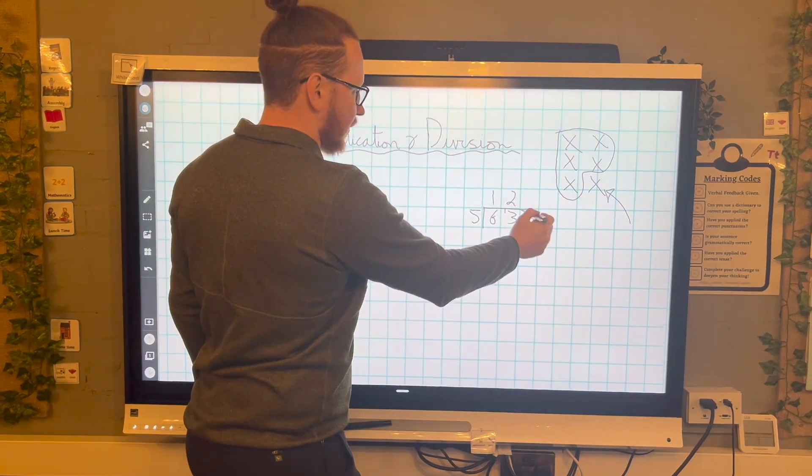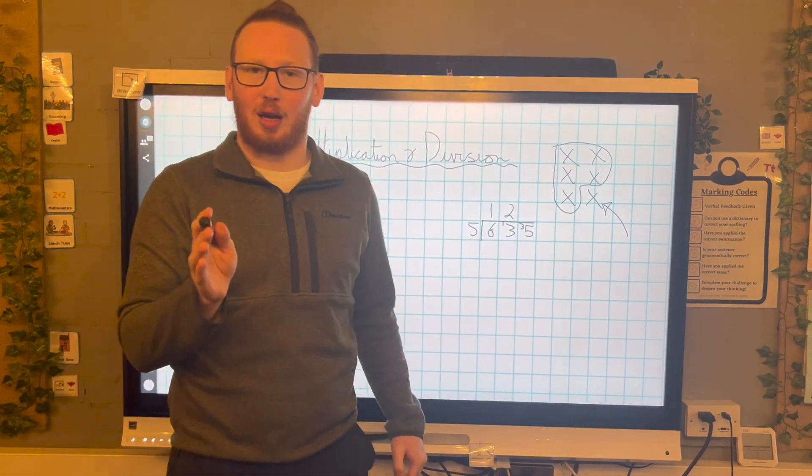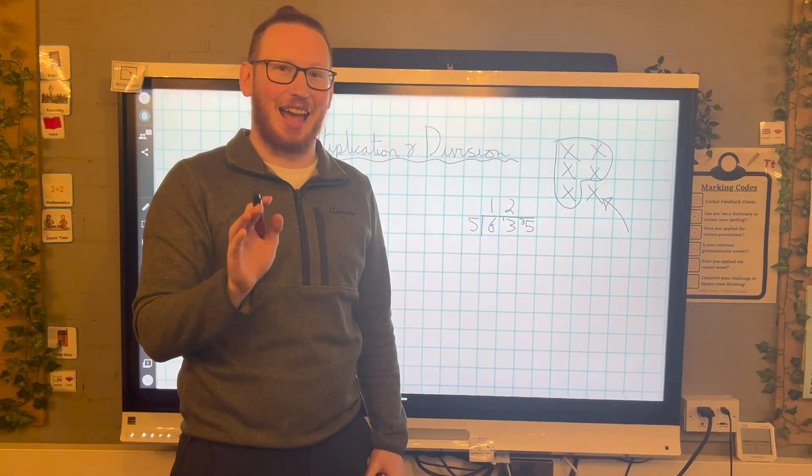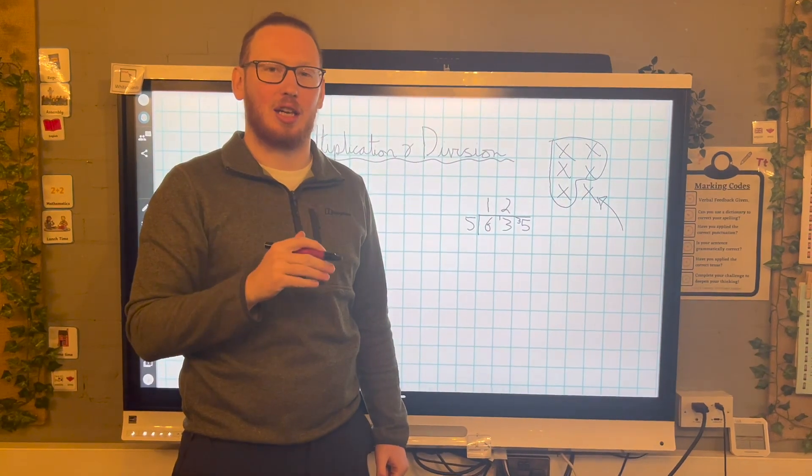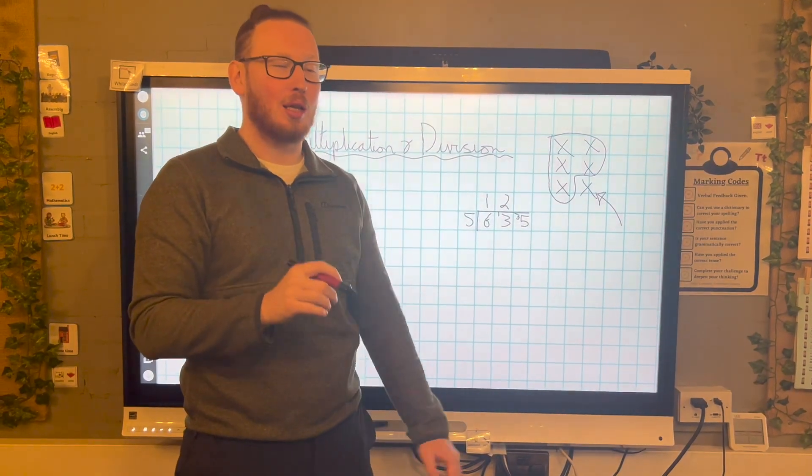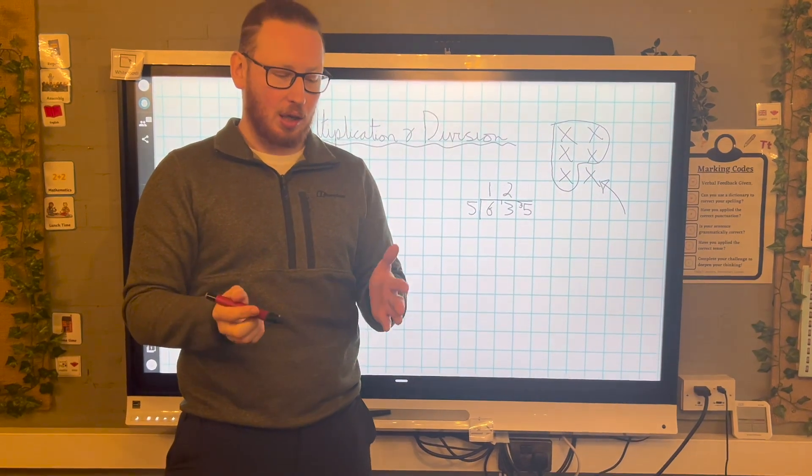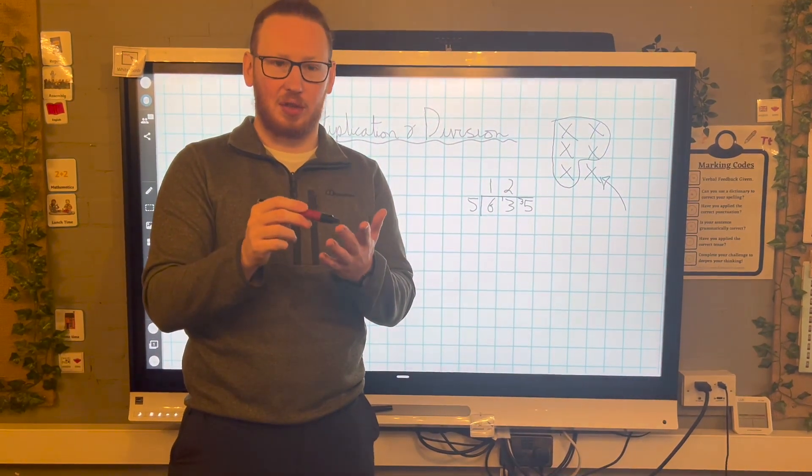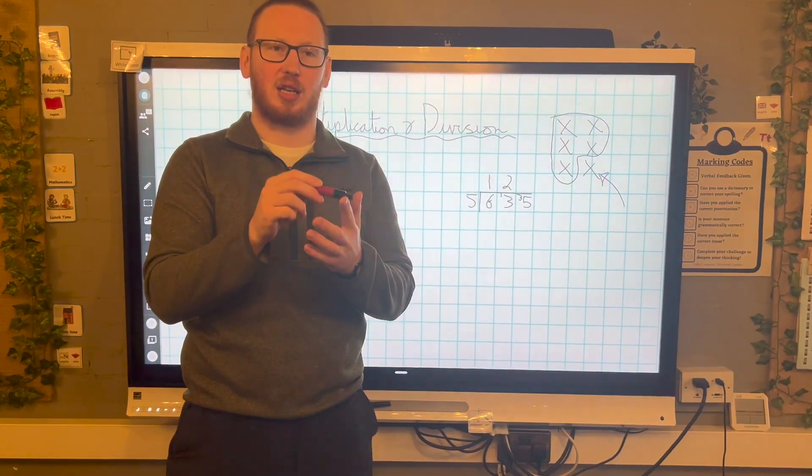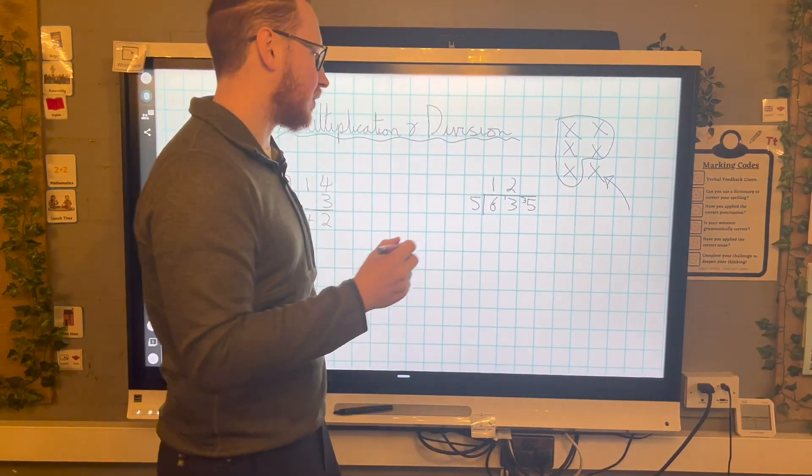Again, fives into 35. Now, those of you who have noticed, it ends in a five, which means it is definitely a multiple of five. We're going to get a nice clean number this time. So if I count up in my fives, I know five, 10, 15, 20, 25, 30, 35. Seven fives going to 35.